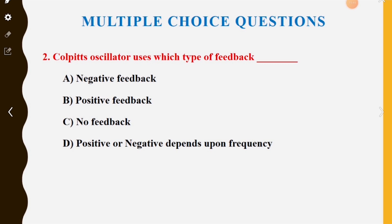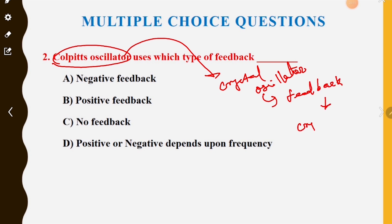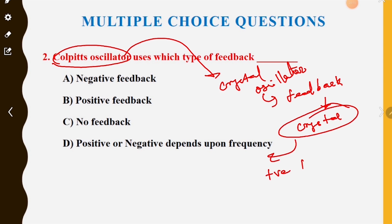Option A is negative feedback, Option B is positive feedback, Option C is no feedback, Option D is positive or negative depending upon frequency. The Colpitts oscillator uses positive feedback, so Option B is the correct answer.